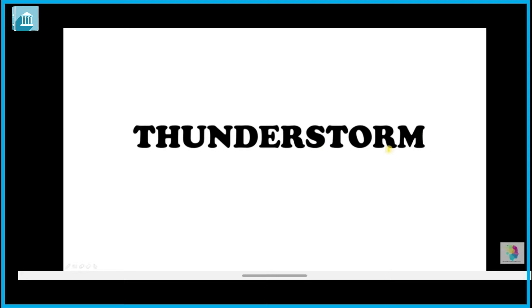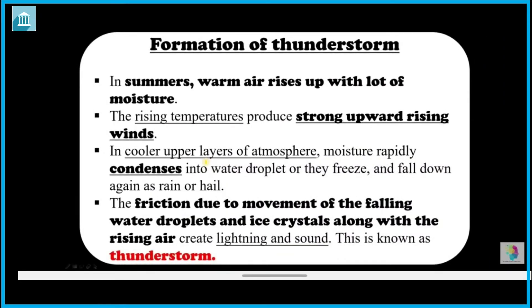The first thing we are going to learn is about thunderstorms and how they are formed. In summers, warm air rises up with a lot of moisture, and this rising temperature produces strong upward rising winds. The upper atmosphere is cool, which condenses the moisture into water droplets or ice, and as a result they fall down in the form of rain or hail.